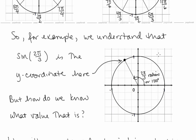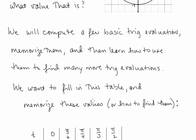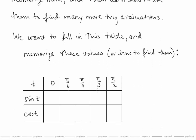For example, we understand that sine of 2π/3 is the y coordinate here. This is the angle 2π/3 radians, or 120 degrees — the distance 2π/3 units. So by definition, sine of 2π/3 is the y coordinate there. But how do we know that value? We're going to compute a few basic trig evaluations, memorize them, and then learn how to use them to find many more trig evaluations.